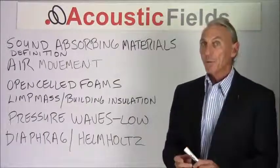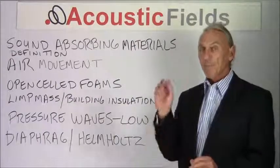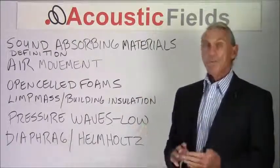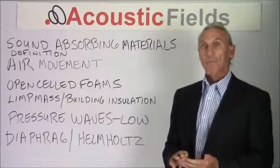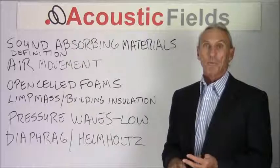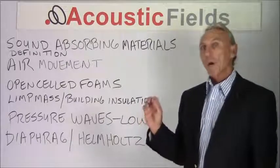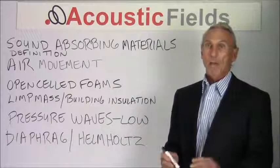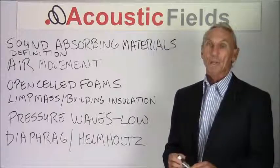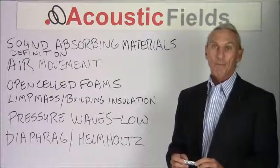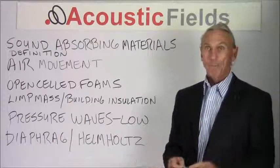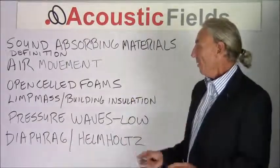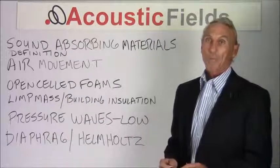There are two basic kinds of sound absorption processes. There's air movement or molecular velocity, which most of your foams — your open-celled acoustic foams and your building insulations, your limp mass absorbers — use that principle. It requires air movement through the particular sound absorbing material, and through that movement you get sound absorption, you get the heat process, and then you get loss of amplitude. Open-celled foams and limp mass products are really good at that.